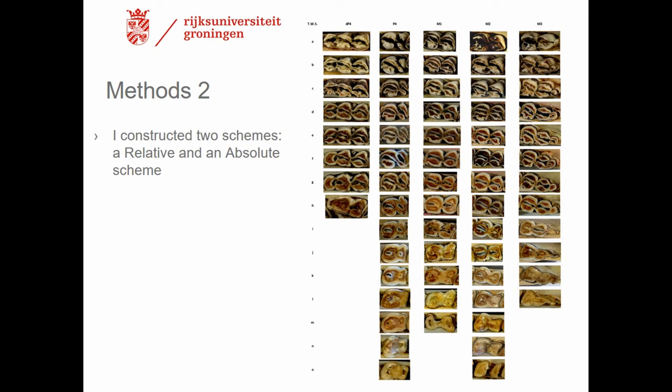I then constructed two schemes: a relative and an absolute scheme, both based on the northern cold collection. The absolute scheme deals with the absolute ages of the reindeer in that collection, while the relative scheme deals with relative ages and can be used on any reindeer population and can also be calibrated.